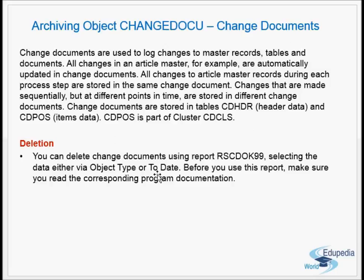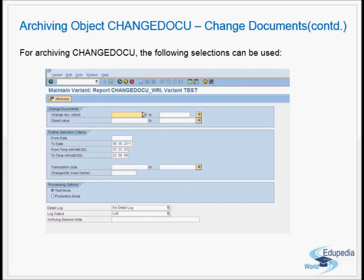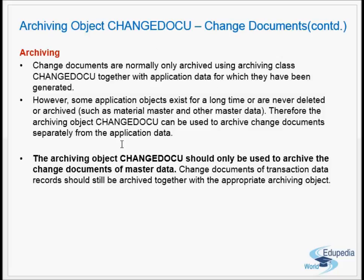For change documents (archiving object CHANGE_DOCU), change documents capture all changes made to master data, transactional data, and documents. The report for deletion is RSCDOK99 and the tables are CD_HDR, CDPOS, and CDCLS. Changes made to the same object at different points in time are recorded in different change documents. For transactional data, change documents should not be deleted or archived separately — only for master data can you use this archiving object independently.